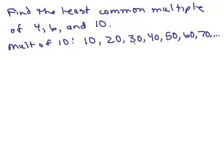30: 4 doesn't go into 30, but 6 does — so that's not a multiple of both. 40 is not a multiple of both 4 and 6. 50 is not a multiple of both. But 60 is a multiple of both 4 and 6. So the answer is 60. Essentially, you ask: do both 4 and 6 go into each multiple of 10, until you find one that works — the smallest number they all go into without a remainder.